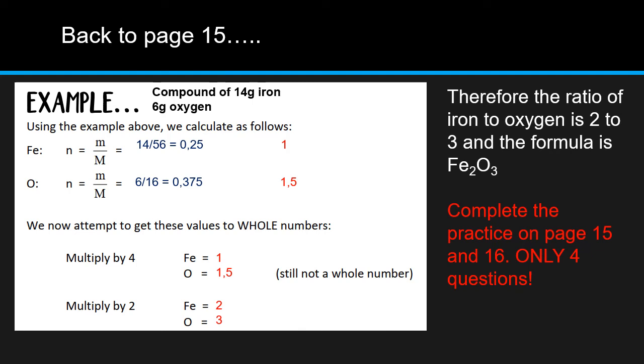Those are very, very small decimals. So we're going to attempt to get to the whole numbers. How do we get to whole numbers with 0.25? I'm going to have to multiply by 4. So to multiply by 4, I'm going to get to 1. To multiply by 4, I'm going to get 1.5 for oxygen. It's still not a whole number, grade 10s. You've done everything right at this stage, but it's still not a whole number for oxygen. So now I have to multiply by a further 2. So I'm going to have, for iron it's going to be a ratio of 2, or for oxygen it's going to be 3. So therefore, the ratio of iron to oxygen is 2 to 3, and the formula, the empirical formula, is going to be Fe2O3.